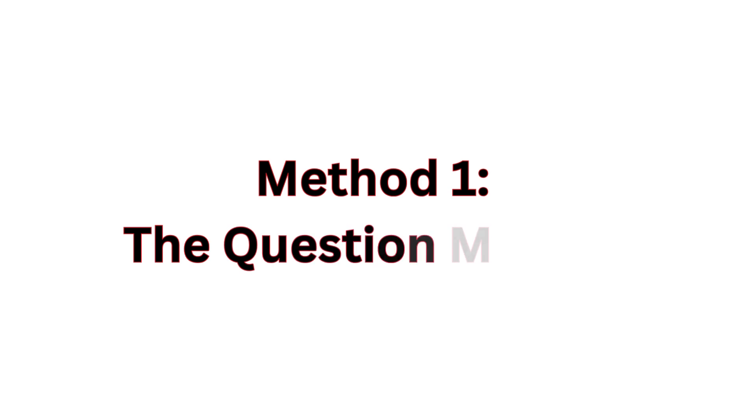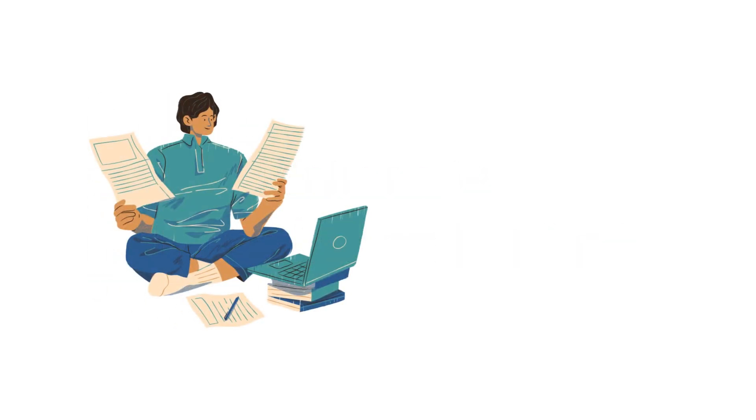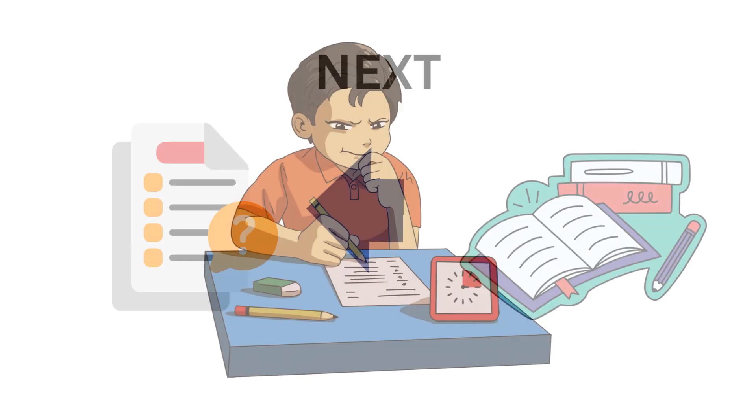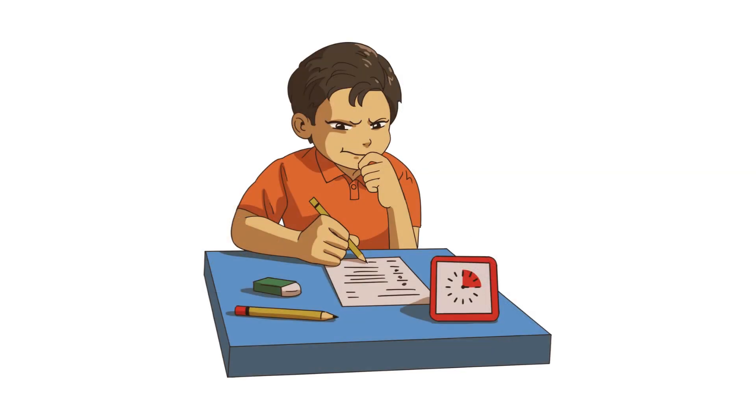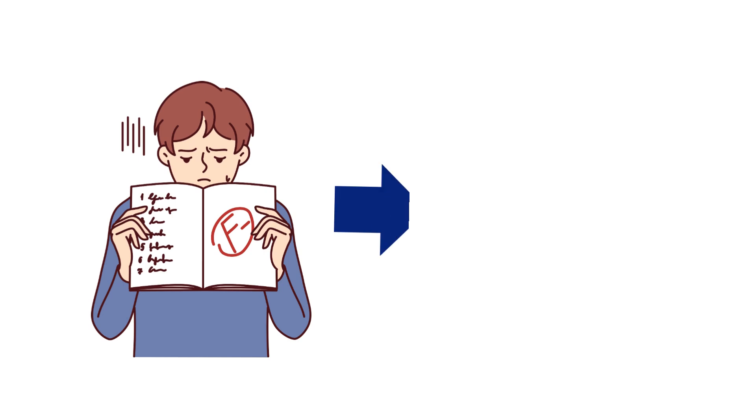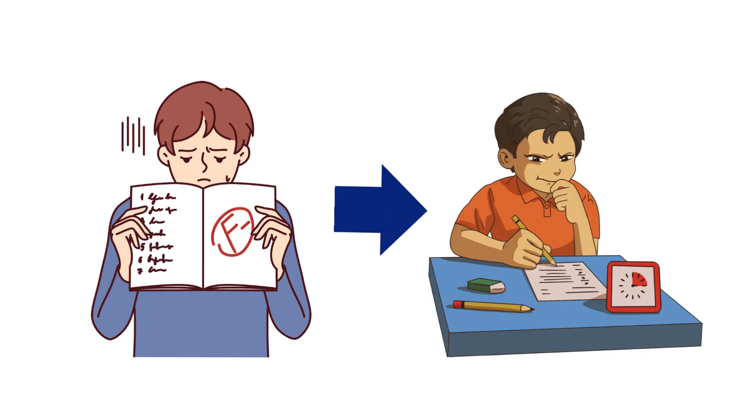How to effectively do an active recall? Method one, the question method. Start by learning the concepts from your resources and taking notes. Next, create a list of questions based on those notes. When studying, try to answer these questions without looking at your notes. If you can answer them correctly, congratulations, you've built a strong memory. If not, review your notes and try again. Additionally, you can make flashcards with questions on one side and answers on the other. This method helps reinforce your memory by repeatedly testing your recall ability and reviewing the material as needed.